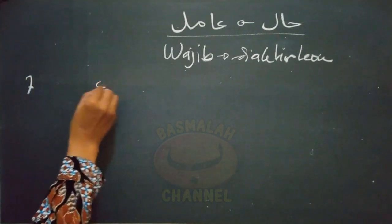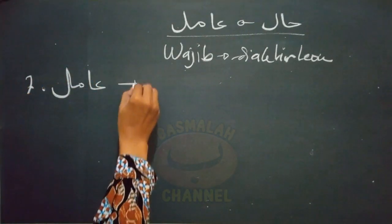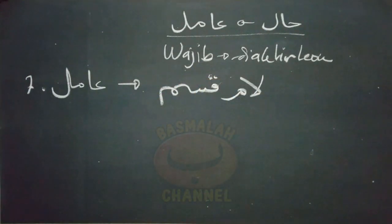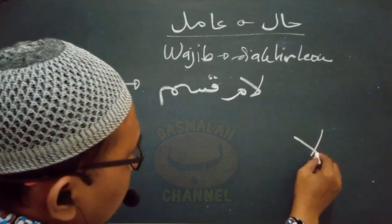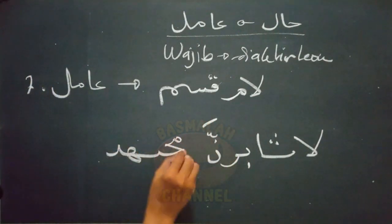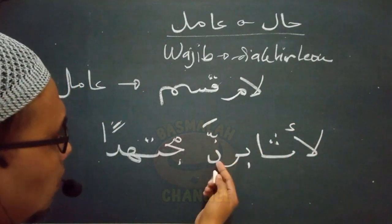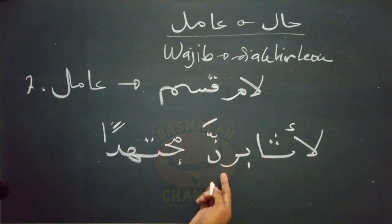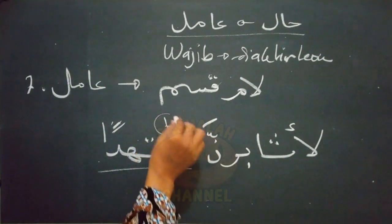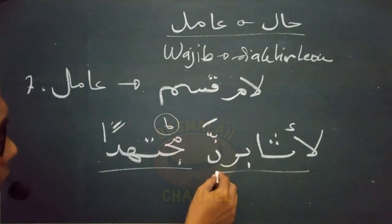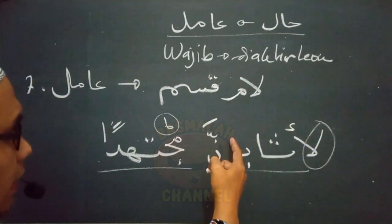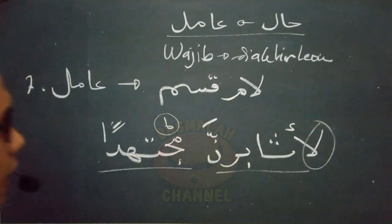Kondisi ketujuh adalah manakala amil diiringi dengan lam qasam, yaitu lam yang bermakna sumpah. Contohnya: demi sungguh akan menetapi aku 'mujahidan' padahal dalam keadaan bersungguh-sungguh. Lafad 'mujahidan' di sini sebagai hal, sementara amilnya — lafad 'uthabironni' — didahului oleh lam qasam. Maka lafad 'mujahidan' tidak boleh didahulukan dari amilnya. Tidak boleh kita katakan 'mujahidan la uthabironni'.